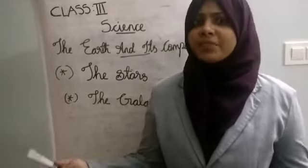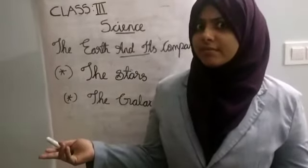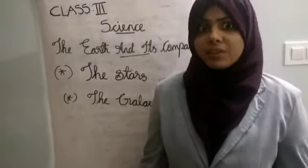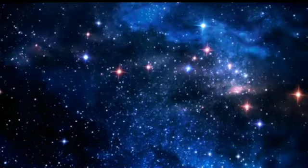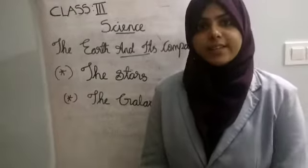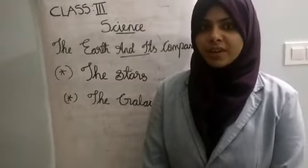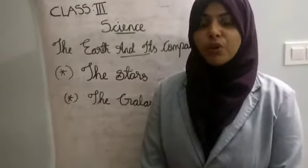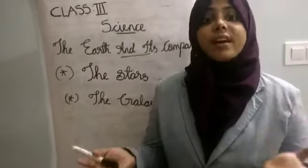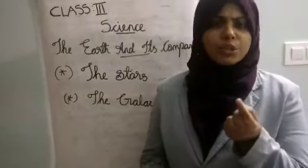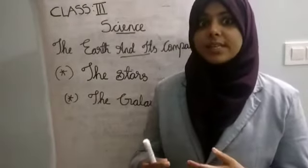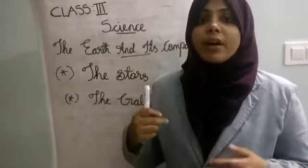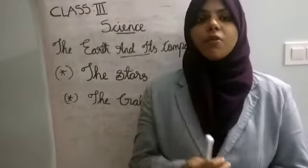Then, stars. Children, have you ever wondered what the stars are? Stars are huge heavenly bodies that have their own light. Most of the stars are bigger than our sun, but they look so small because the stars are far away from our earth.